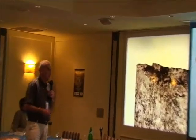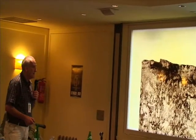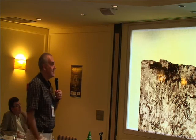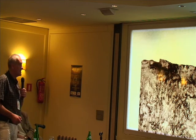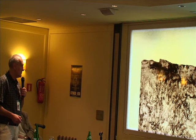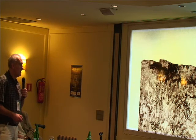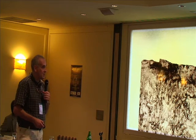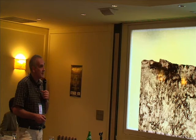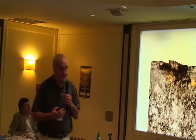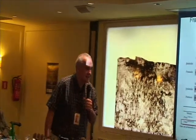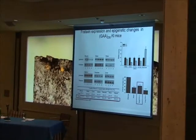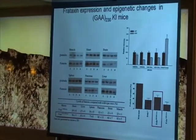The KiKi mice have mildly reduced frataxin levels — because the repeat is short, the effect in mice is probably less marked than in humans — but the levels are nonetheless significantly and reproducibly reduced across most tissues. In addition, these mice show the same loss of histone acetylation that characterizes frataxin gene repression in human cells, making them a model for both the genetic and epigenetic changes seen in humans.